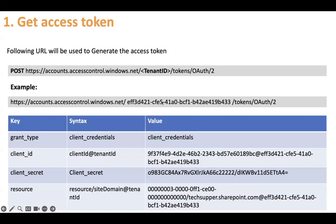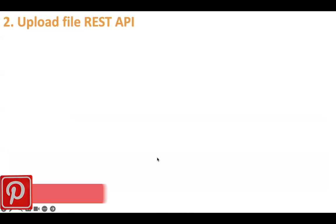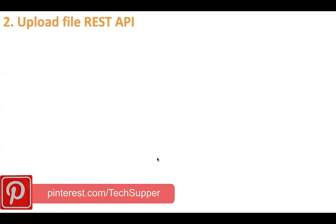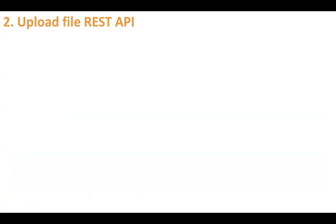So this tenant ID we are using at three places: one in the URL itself, second with the client ID, third with the resource. And once your access token is generated, you will use the SharePoint APIs to upload the file, to create folders, to get access of the document ID, and so on and so forth.